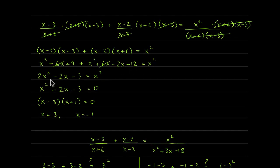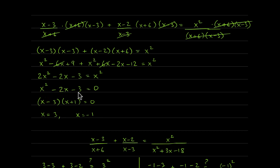Combining like terms: x squared plus x squared is 2x squared; negative 6x and positive 6x cancel; leaving negative 2x; and 9 minus 12 is negative 3 — equals x squared on the right. Moving x squared to the left yields x squared minus 2x minus 3 equals 0. This factors easily into x minus 3 times x plus 1. By the zero product property, x equals 3 or x equals negative 1.